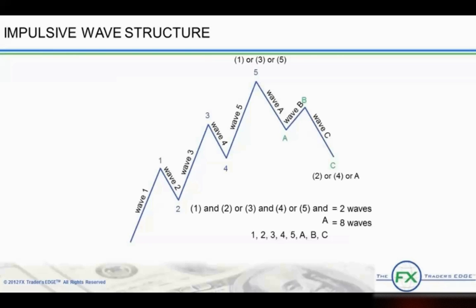The complete 8-wave cycle — 1, 2, 3, 4, 5, A, B, C — is really 2 waves of a larger degree. Looking at this sequence as waves 1 and 2, we can say that waves of any degree in any series always subdivide into waves of a lesser degree. Specifically, waves 1 and 2 of the daily chart will subdivide into waves of a lesser degree, which can be seen on an hourly chart.